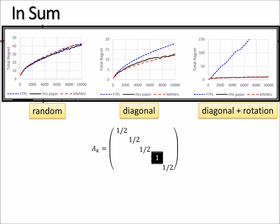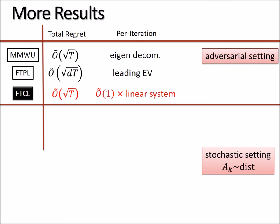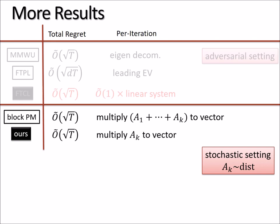So in fact, in our paper, we also have more results. We also showed that in stochastic setting, we can compress to dimension one and outperform the state-of-the-art. So this part, feel free to look at our paper. So that's all I want to say. Thank you.